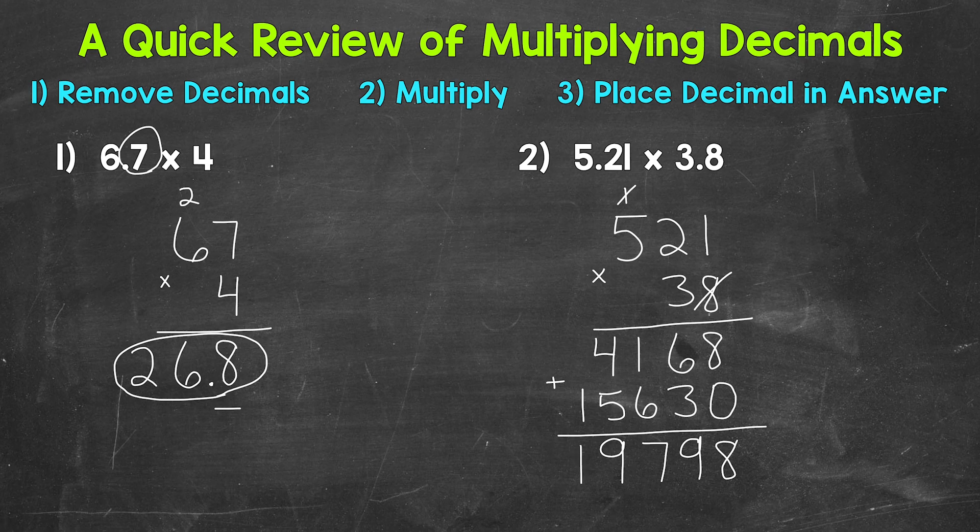we look at our original problem and see how many digits are to the right or are behind a decimal. Well, this 2 would be 1, this 1 would be 2, and then this 8 would be 3. So we have 1, 2, 3 digits behind or to the right of a decimal. So our answer needs 3 digits to the right of the decimal.